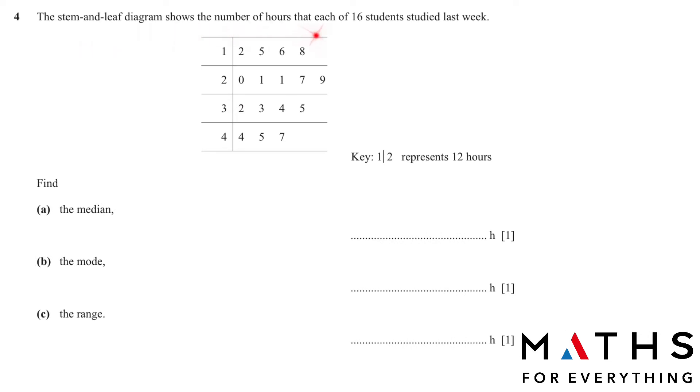The stem and leaf diagram shows the number of hours that each of 16 students studied last week. 1 to 2 represents 12 hours. So this is 12 hours, 1 and 5 is 15 hours. You want to find the median. Median is the mid value. Total number of students are 16. If it is an even number, then you divide by 2. You get 8. This is your position, the 8th position.